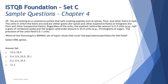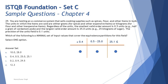The question asks: which of the following is the minimal set of input values that covers the equivalence partitions for this field? To answer, you first create a quick table of equivalence partitions. There are three partitions: the valid range from 0.5 to 25, the invalid range on the left where anything less than or equal to 0.4 is not valid, and the invalid range on the right where anything greater than or equal to 25.1 is not valid. We need values that cover all three partitions.